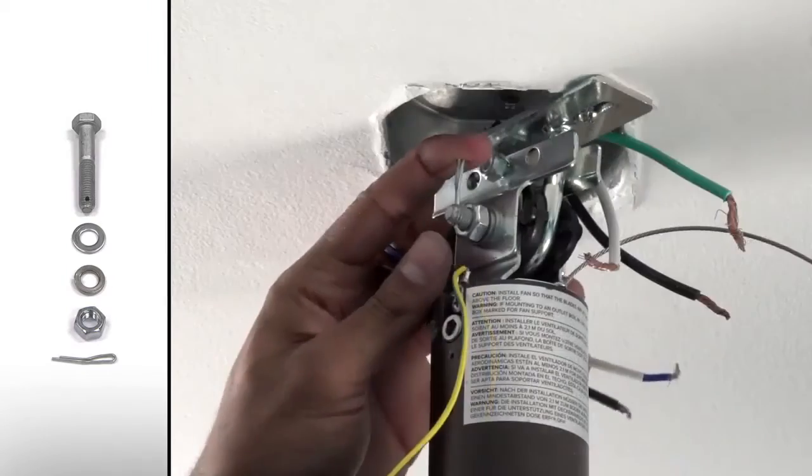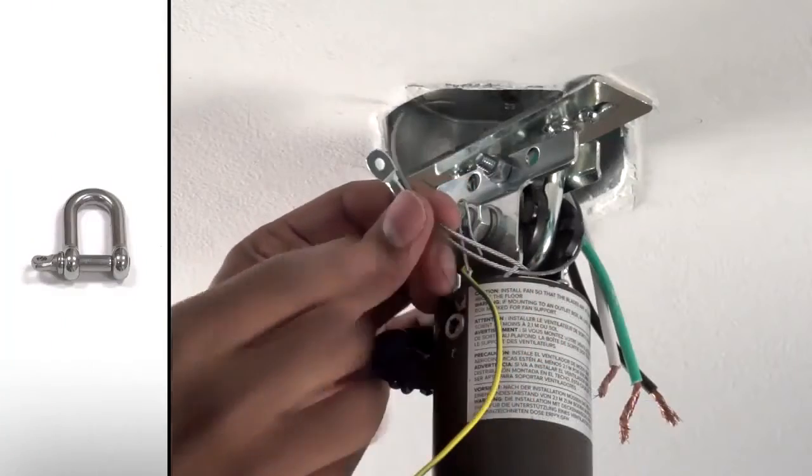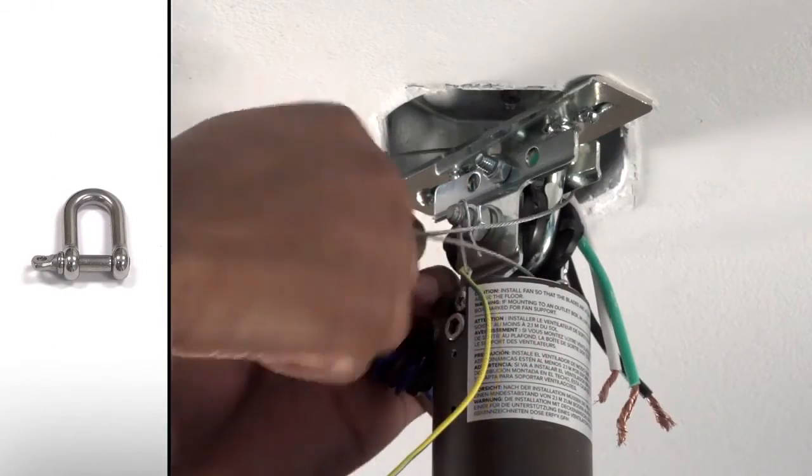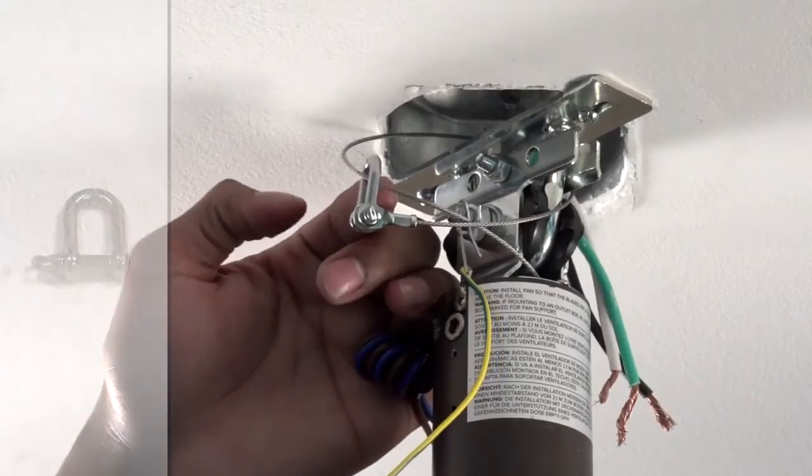Finally, insert the split pin. Once the mount is secured, loop the safety cable around the mounting plate, then secure it with the shackle.